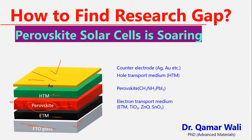The hole transport medium needs a material that can quickly transport holes to the electrode. Similarly, the electron transport medium needs a material to quickly transport the generated charges from the perovskite. There is huge potential in improving these layers to boost the performance of perovskite solar cells.